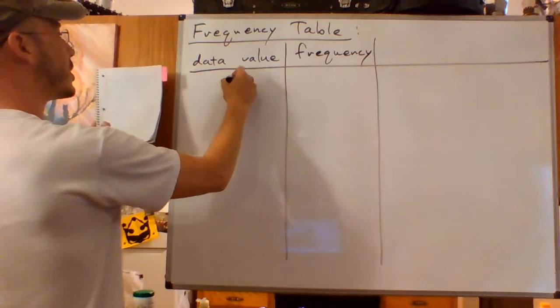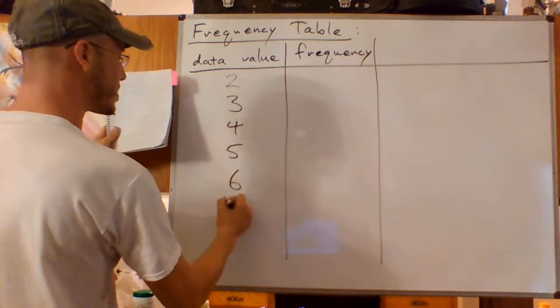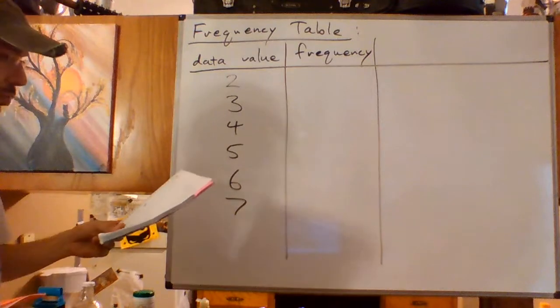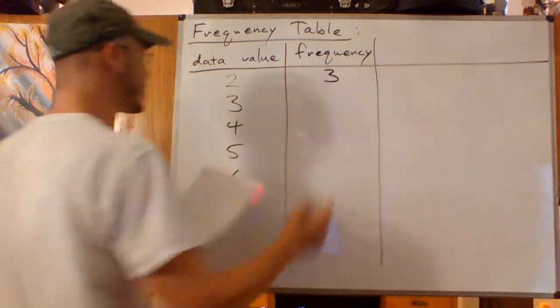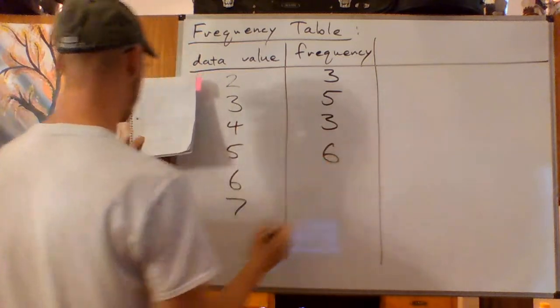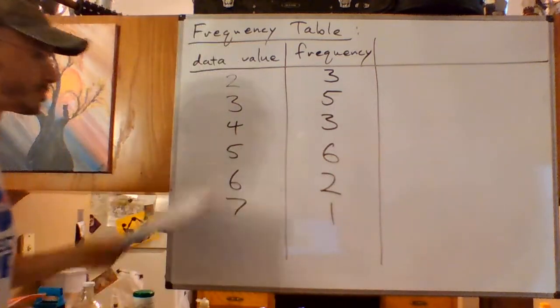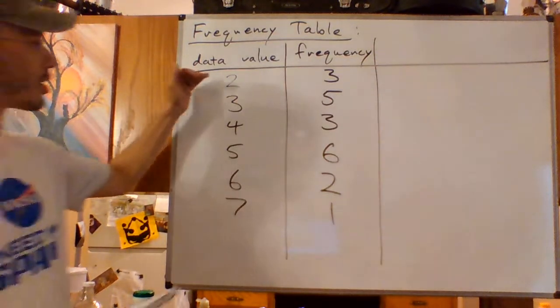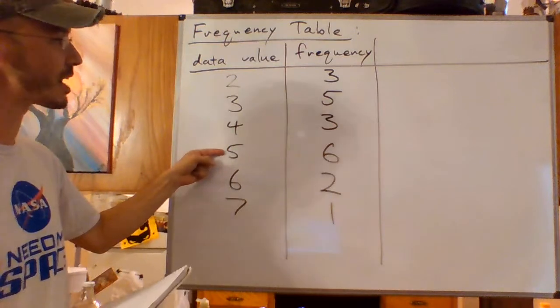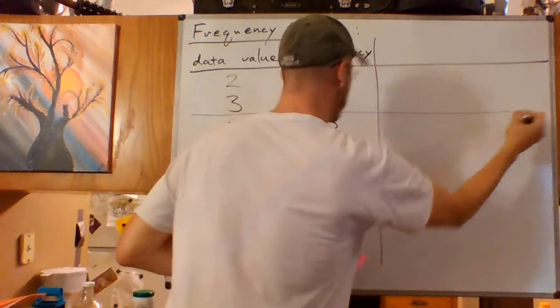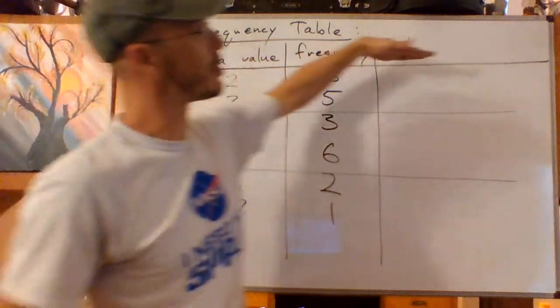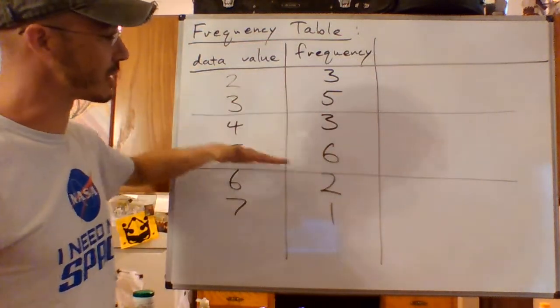I'm going to extend it to include relative frequency, but frequency table I'm going to have the data value in the first column and I'm going to have the frequency in the second column. Be sure to save some space on this side because we're going to do a couple more things with this table. So the data values in that list are two, three, four, five, six, and seven. There were three twos, five threes in that list, three fours in that list, six fives, two sixes, and one seven.